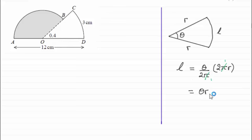So in order to do this, we know the length of the arc L is 3 centimetres, and we know the angle theta is 0.4, so it's a question of just rearranging that.